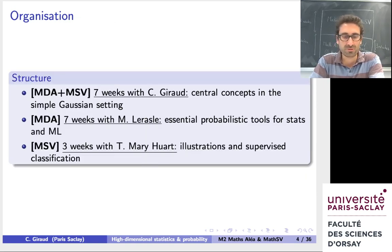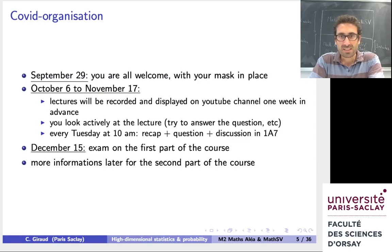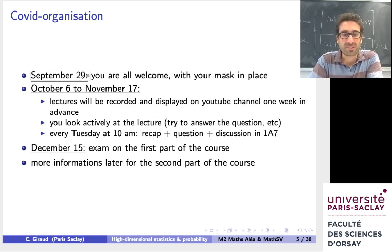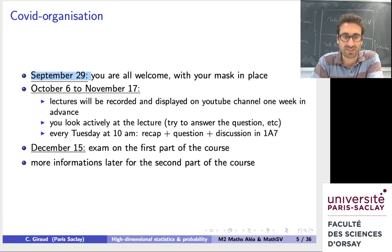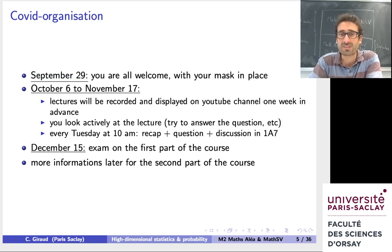So this is the structure: seven weeks jointly from the joint programme, then seven weeks for Mathématiques de l'Élatoire, and three weeks for Mathématiques Poisson du Vivre. Because of Covid, we have to change the organisation. On September 29, you are welcome to all come, and I will give you something like this — a version of the lecture notes. You all come; it will be in room 107, and you have to wear your mask. Everybody is required to have a mask to enter the building in Orsay.